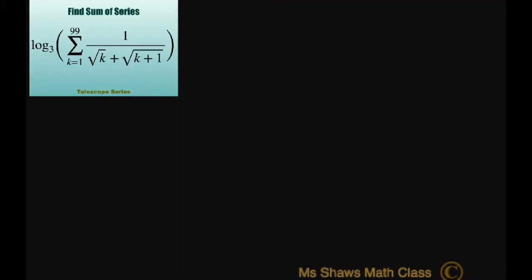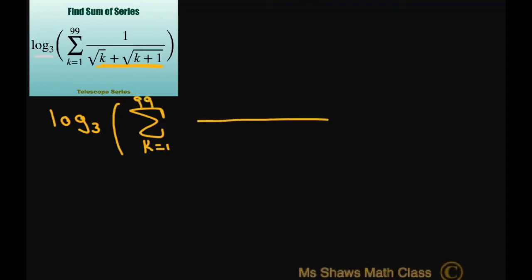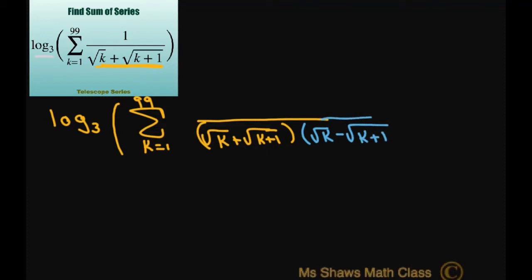Since we have this log base 3, what we're going to do is simplify by rationalizing this denominator. So I'm going to take log base 3 and then the sum from k equals 1 to 99, and multiply the denominator — square root of k plus square root of k plus 1 — by its conjugate, which is square root of k minus square root of k plus 1. If I multiply the denominator by this, I also have to multiply the numerator, which is just 1, so the numerator is just going to be square root of k minus square root of k plus 1.